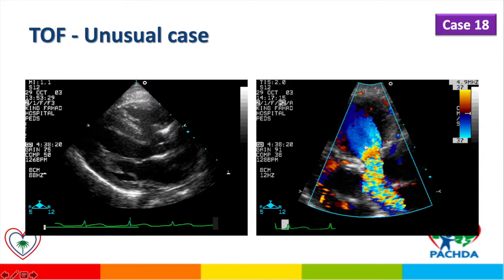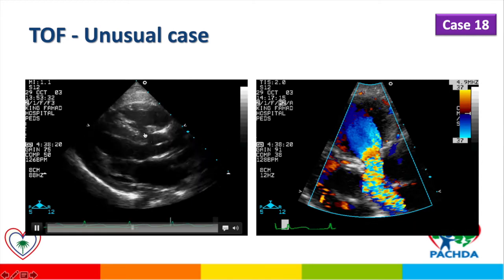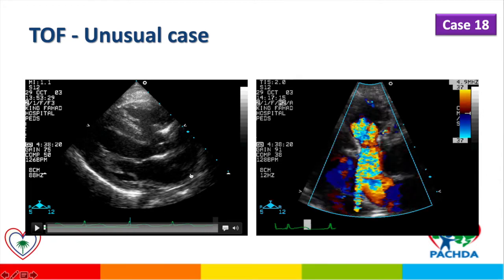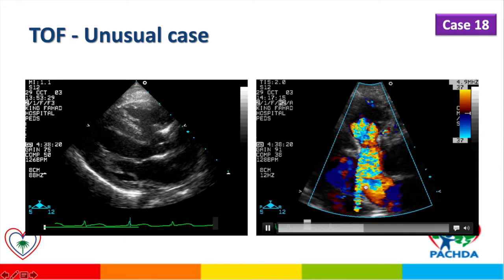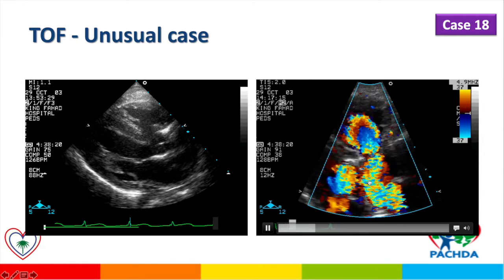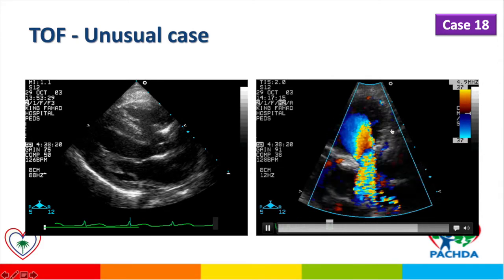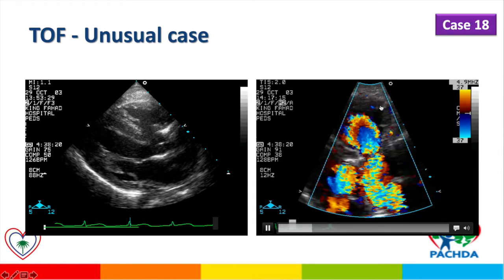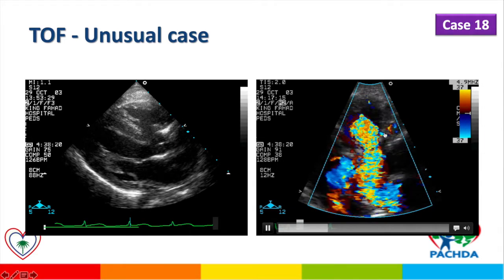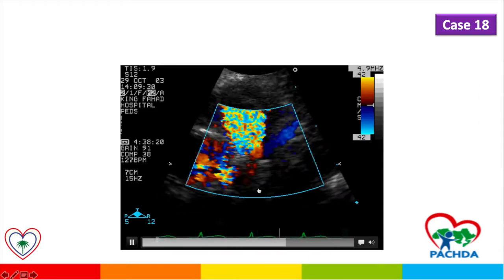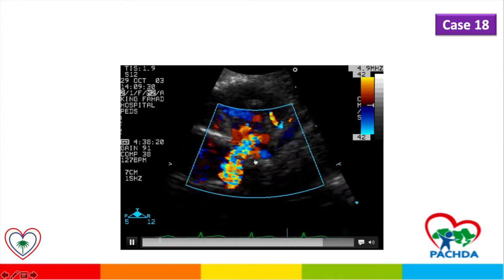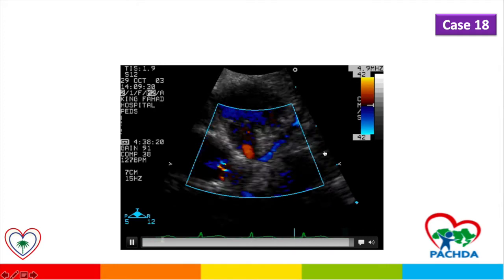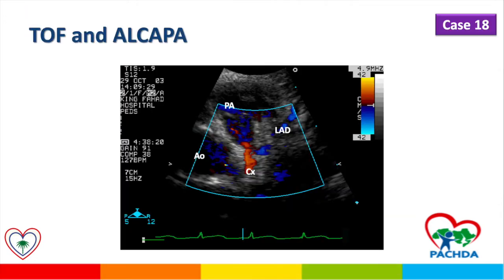This is an unusual case of tetralogy of Fallot. The patient has a large VSD with overriding of the aorta and all features of tetralogy of Fallot, with severe valvular and subvalvular right ventricular outflow tract stenosis. We noticed significant signal on the right ventricular outflow tract, raising concern for coronary artery abnormalities. On careful inspection, we can see the left coronary artery coming out of the pulmonary artery with a reversed flow pattern — so this patient has ALCAPA in addition to tetralogy of Fallot, which is a very rare combination.